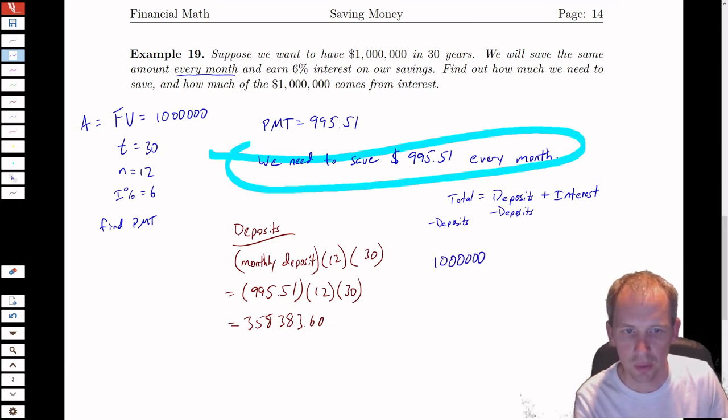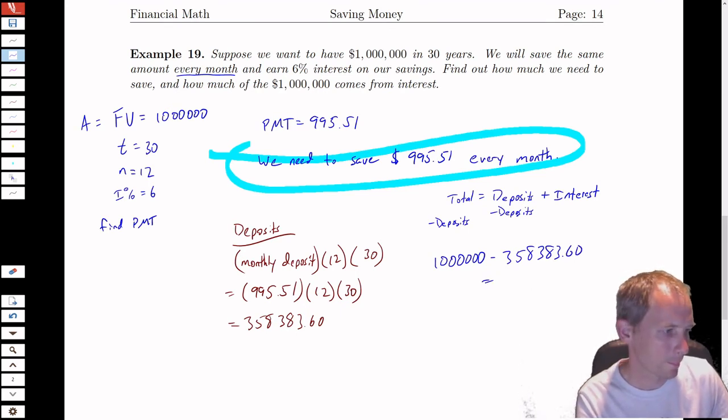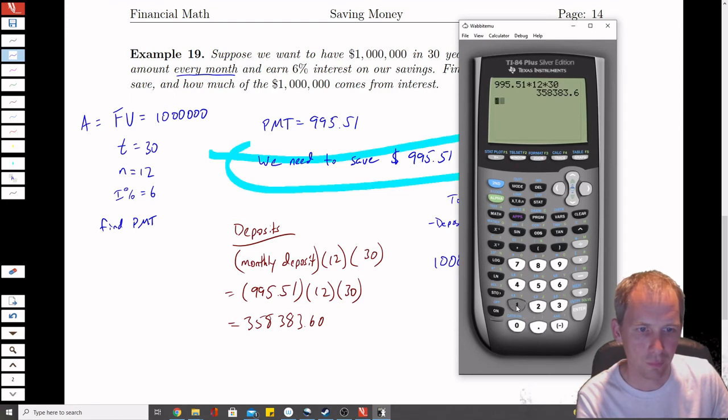So $1,000,000 minus our deposit amount, $358,383.60. And I get a difference of $641,616.40.